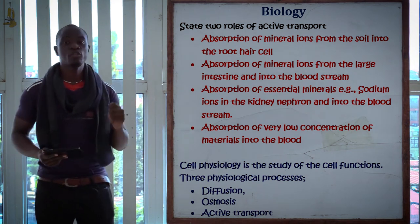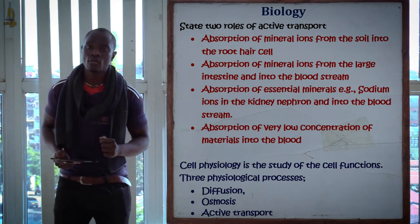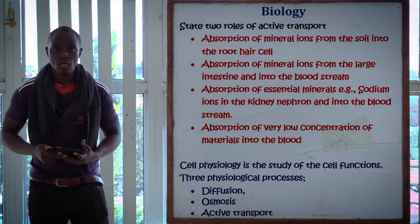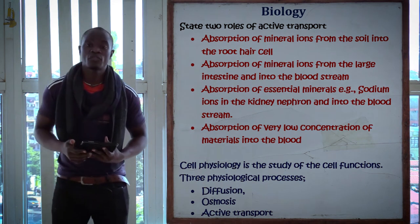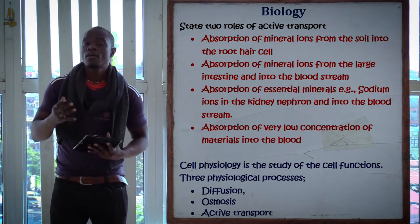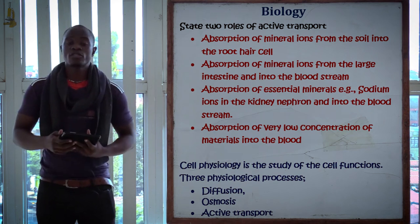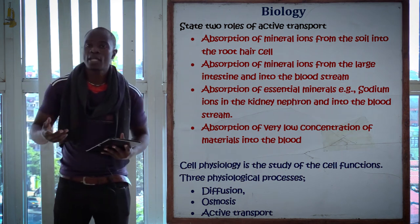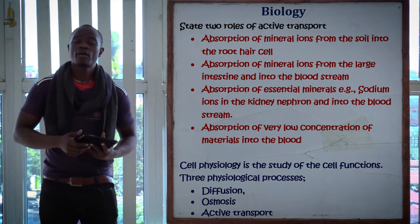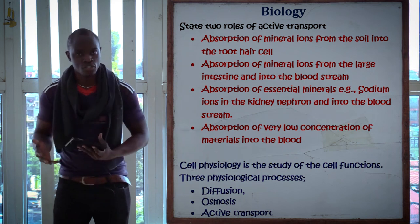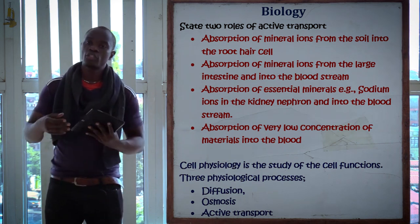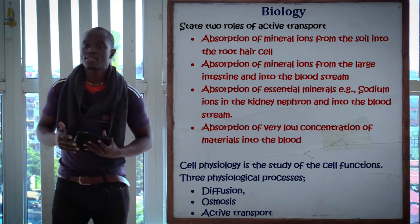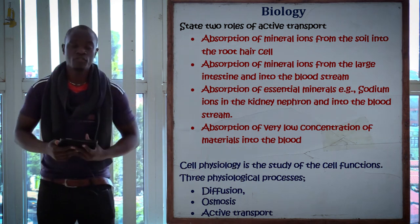The first physiological process is diffusion. The second is osmosis. The third is active transport. Diffusion is the process whereby molecules or particles move from a region of high concentration to a region of low concentration.